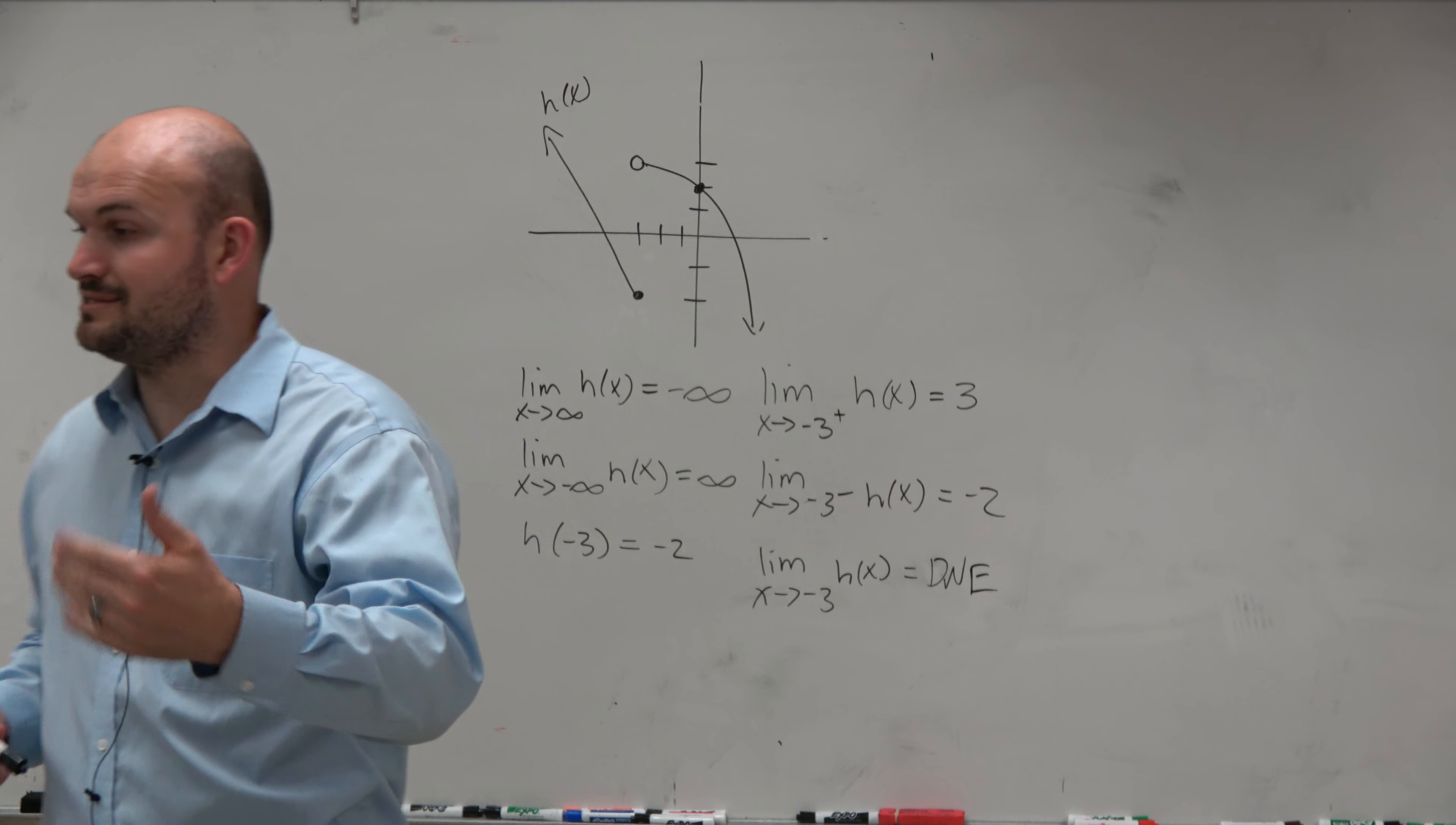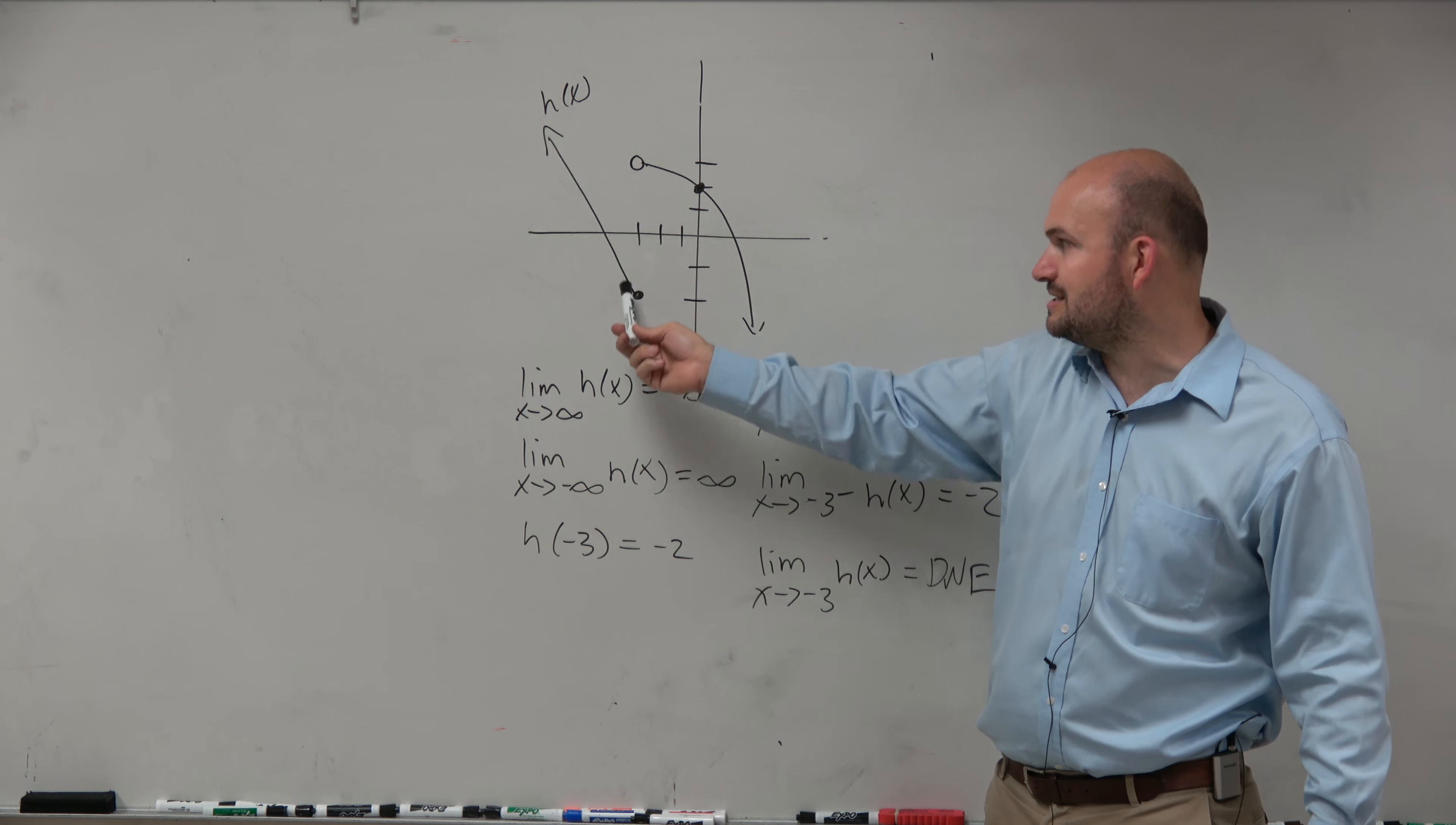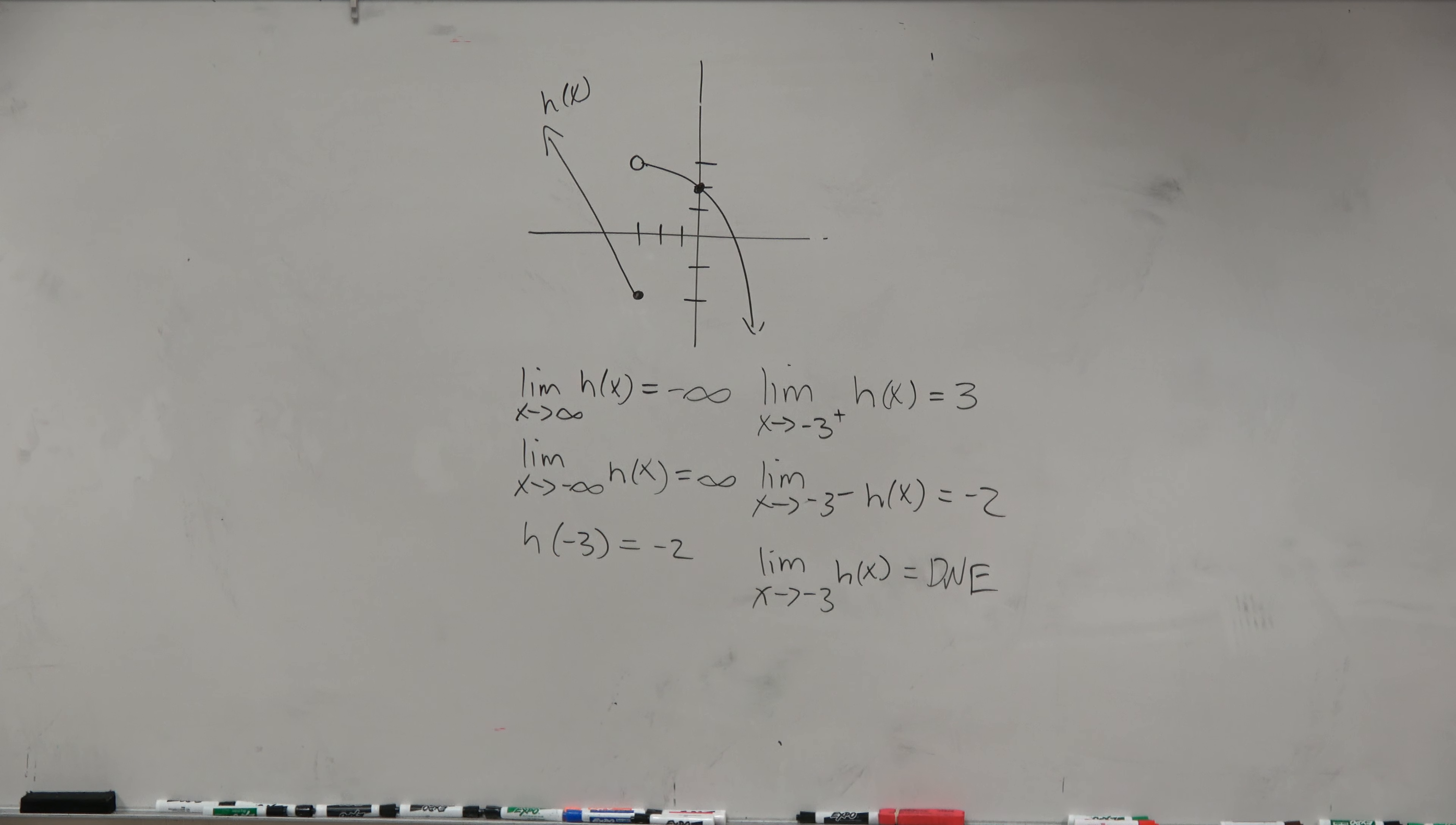And again, that goes back to what I said last video or last problem. If your left and right hand limits are not approaching the same value, your limit does not exist. Your general limit does not exist. But guys, just don't look at this and say the limit doesn't exist, because did the left and the right hand limits exist? Yes, those existed. Just not the general limit. Be very clear with that.